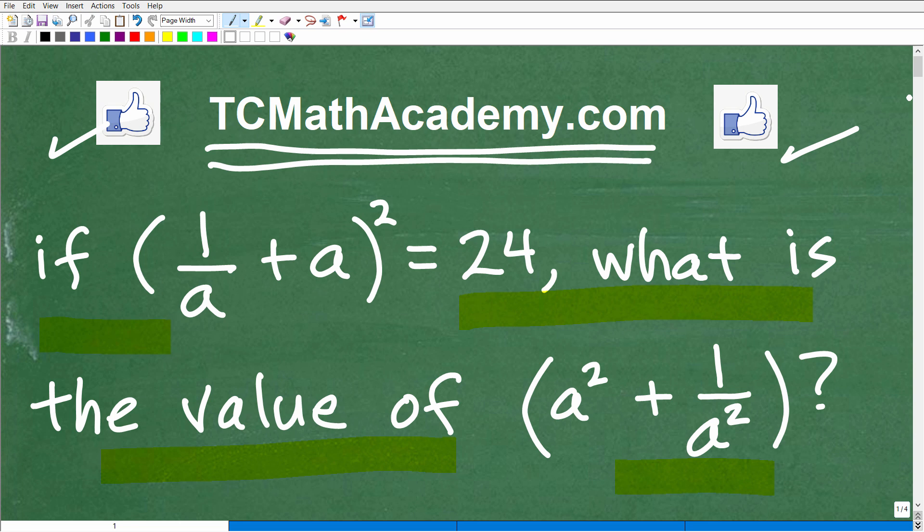Okay, so let's just read the problem one more time before I show you the answer here. So it says if all this right here, (1/a + a)² = 24, what is the value of this expression here? a² + 1/a².